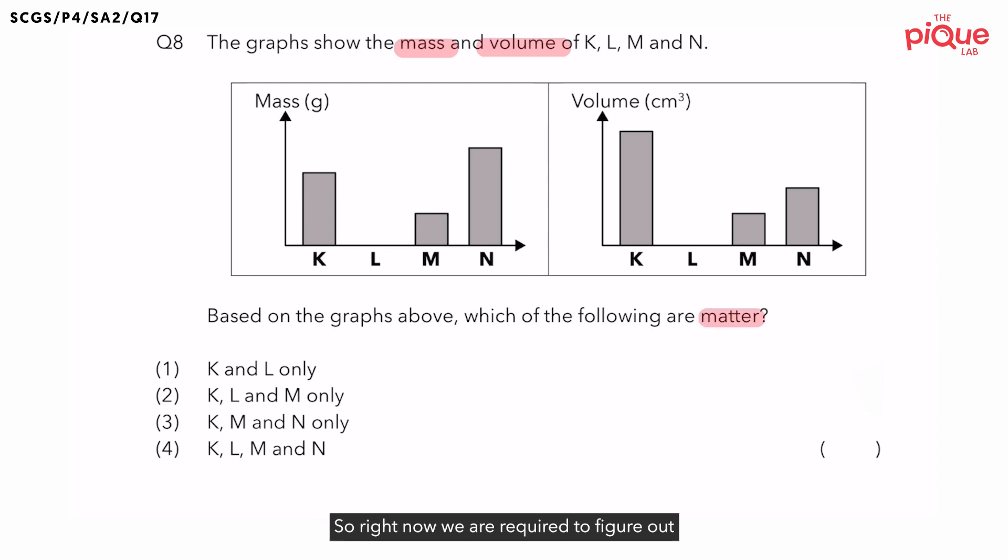So right now, we are required to figure out among K, L, M and N which of them are matter just by looking at the graph given to us. So what are the properties shown to us on the graphs again? The graph shows us the mass and the volume of K, L, M and N. So how is the mass and volume related to matter?